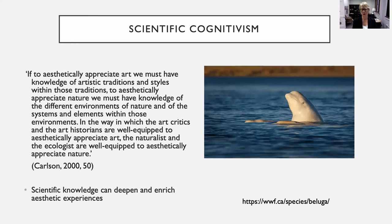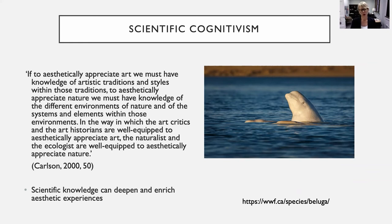Carlson wants to say that when we move to understand our aesthetic appreciation in the context of environment, how do we ground, inform, shape, and frame it? He doesn't want to think it could be anything goes. He's interested in understanding the subjectivity and objectivity of aesthetic judgments. He thinks scientific knowledge can deepen and enrich our aesthetic experiences, but also helps us to get things right. Let's think about the arts for a moment.